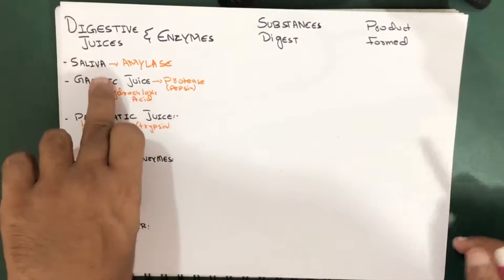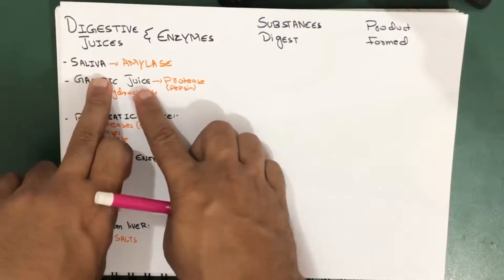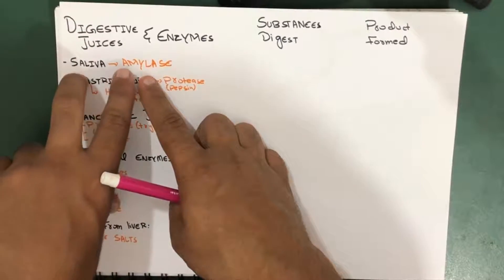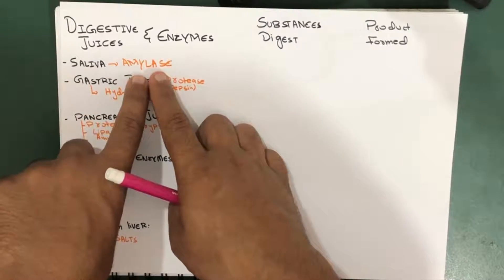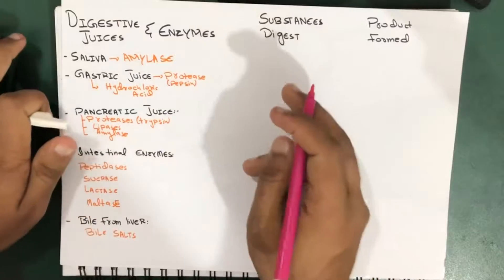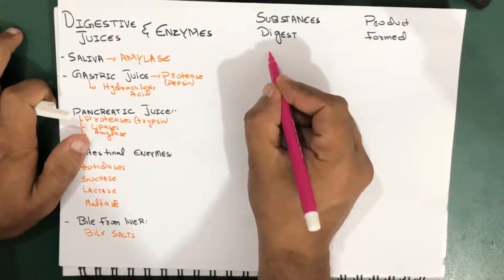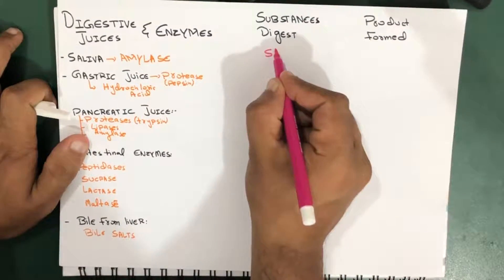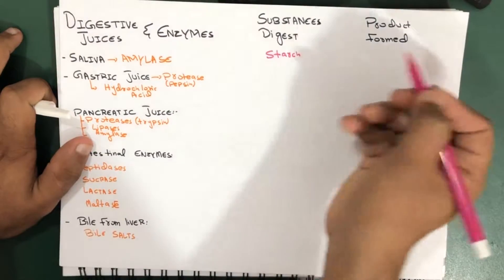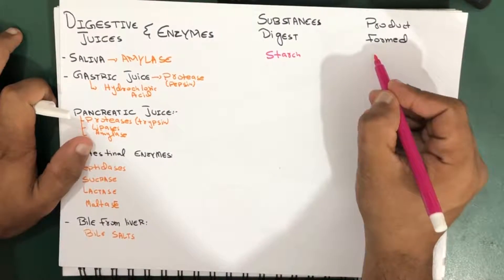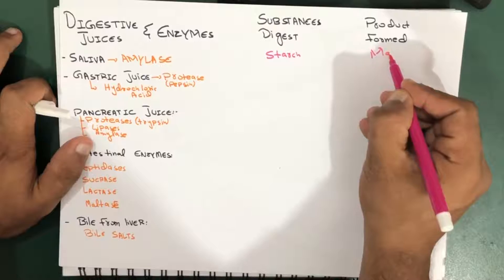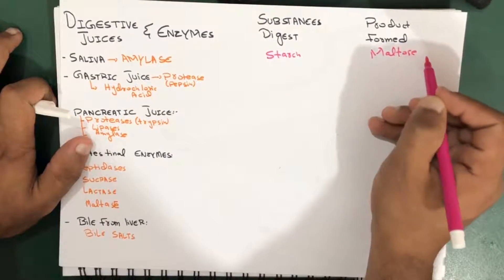We're first looking at saliva. Saliva is a digestive juice which contains an enzyme called amylase, which digests starch. The product which is formed is called maltose, which is a type of glucose.